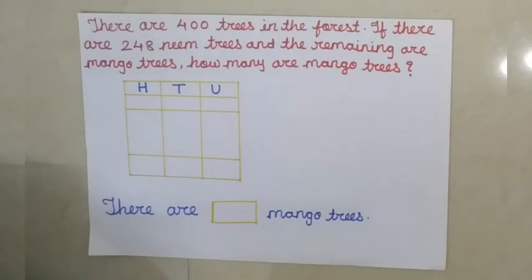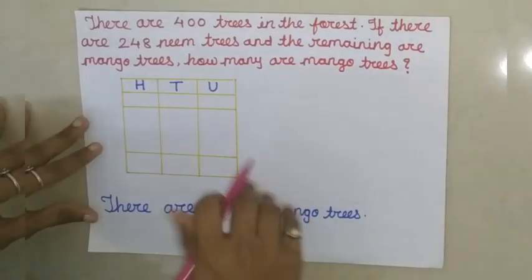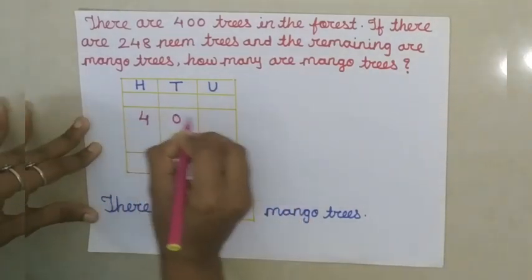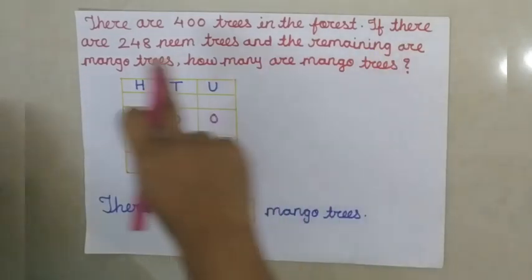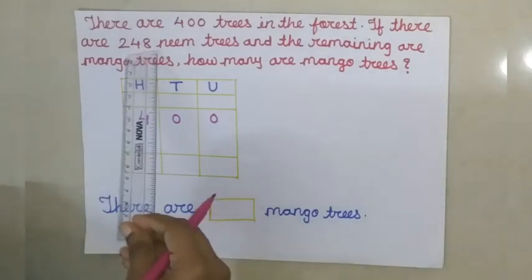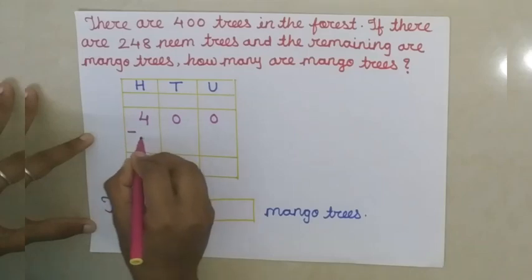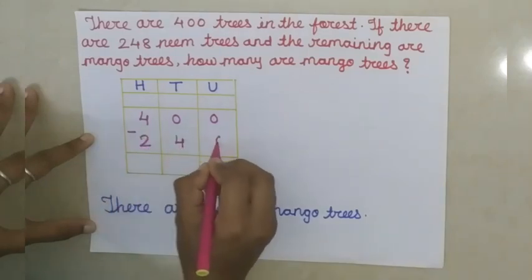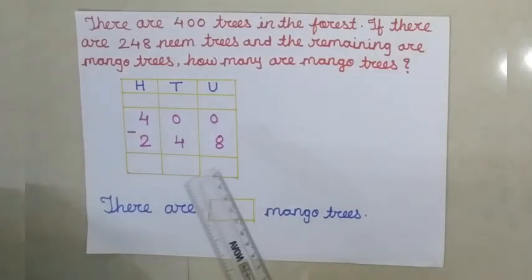Here, your first question is: there are 400 trees in the forest. If there are 248 neem trees and the remaining are mango trees, how many are mango trees? Look here, the total number of trees given to you is 400. So very first, we will write that 400. If there are 248 neem trees, that we will subtract 248. Whichever number you will get, that will be the number of mango trees.